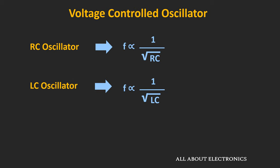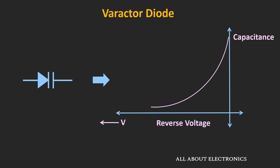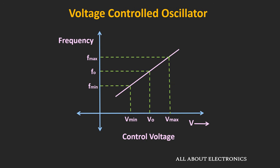For any type of RC or LC oscillator, the frequency is proportional to 1 divided by the square root of C. For the varactor diode, as we increase the voltage, the capacitance of the diode will reduce. That means as we increase the control voltage, the frequency of oscillation will increase.